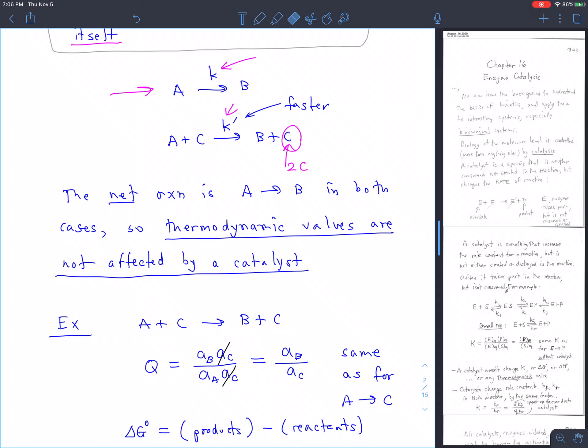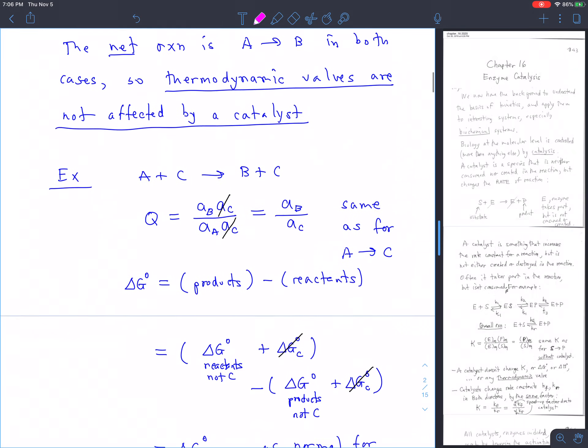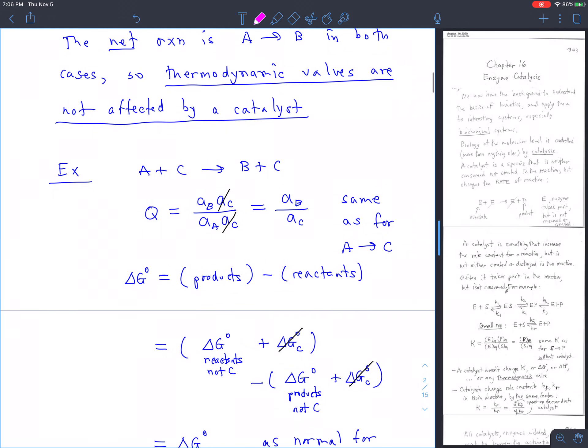Now, because the catalyst is neither created nor destroyed in the chemical reaction, even though it appears on both sides, that means that a catalyst, though it speeds up the rate constant, doesn't change the thermodynamics. You can see that in one way: here's our reaction with the catalyst present. The Q for that reaction, the reaction quotient, the thing that goes into the delta G, the thing that at equilibrium would be the equilibrium constant, using the normal rules would be the activity for B on the product side, the activity for C on the product side, activity for A and activity for C on the reactant side. You can see the activities for C divide out, and you're left with activity for B and activity for A.